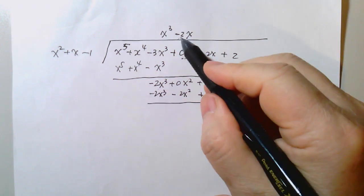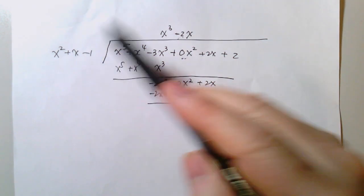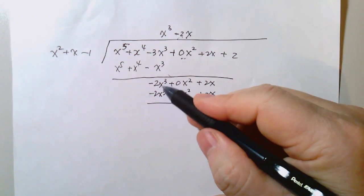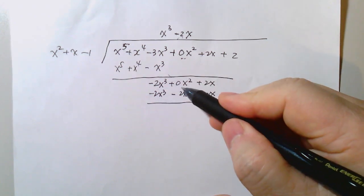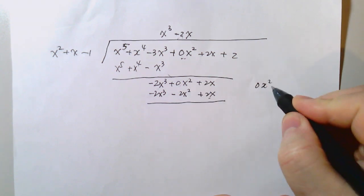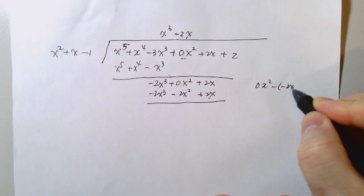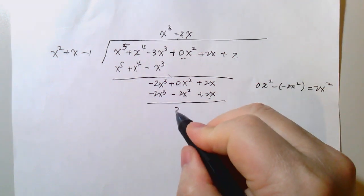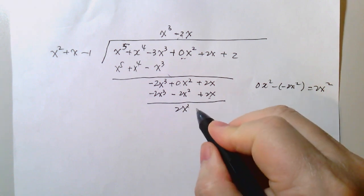Negative 2x times negative 1, positive 2x. Subtraction, so this is 0, this is 0, so 0 minus negative 2x, so 0x squared minus negative 2x squared, which is positive 2x squared, plus 0x plus 2.